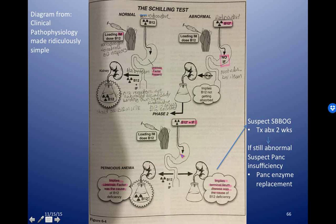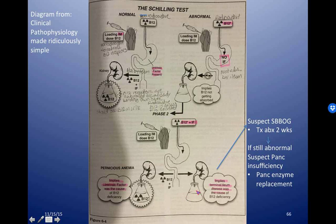So if you give B12 plus intrinsic factor and now get B12 absorption when you did not previously, that means the person has an intrinsic factor deficiency and they have pernicious anemia. But if you added intrinsic factor and still got no radiolabeled vitamin B12 in the urine, that means there's some kind of issue with the terminal ileum. At this point you can suspect small bowel intestinal overgrowth syndrome — you can trial two weeks of antibiotics and repeat the test. If it's normal, the bacterial overgrowth was the cause. If it's still abnormal, you can suspect pancreatic insufficiency and do your full pancreatic insufficiency workup.